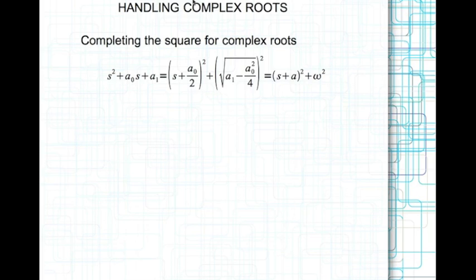When handling complex roots, the first step is to write the polynomial containing the complex root in a form convenient to be inverted as an exponentially decaying cosine or sine term — this process is called completing the square. If you have the polynomial s squared plus a0·s plus a1, you can write it as (s plus a0/2) squared plus (√(a1 − a0²/4)) squared. That is in the form (s plus a) squared plus omega squared, where a = a0/2 and omega = √(a1 − a0²/4).